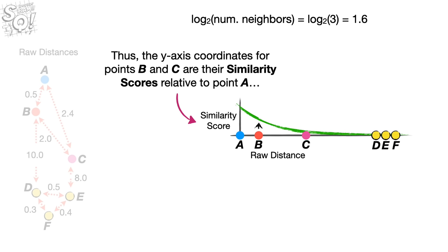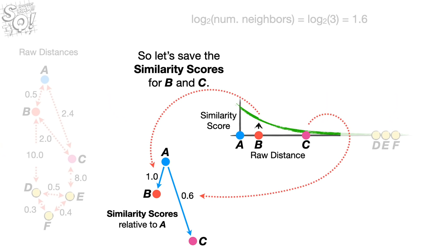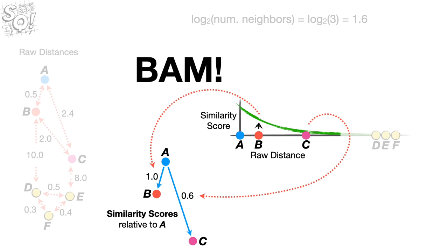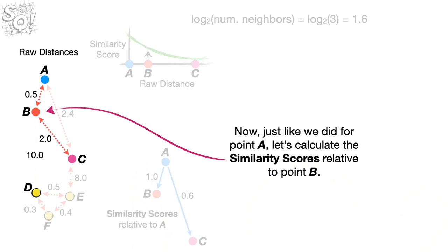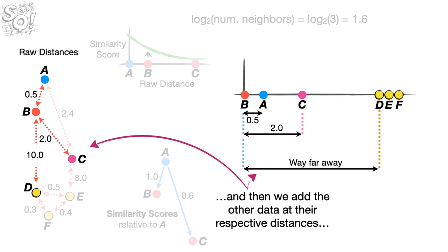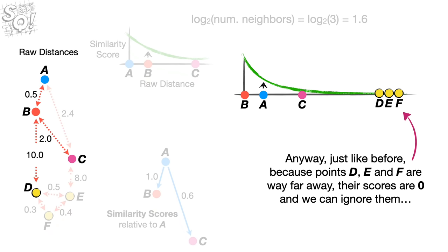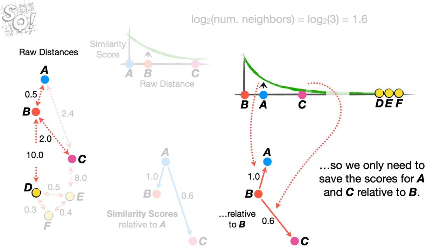Adding these scores together gives us 1.6, the target number. So the y-axis coordinates for points B and C are their similarity scores relative to A, and since the scores for D, E, and F are all 0, we can ignore them. Just like we did for point A, we calculate the similarity scores relative to point B — putting B on a graph, adding all other data at their respective distances, then drawing a curve so that the sum of similarity scores equals 1.6. Again, D, E, and F scores are 0, so we only save scores for A and C relative to B. Likewise, we calculate and save the non-zero scores for point C.